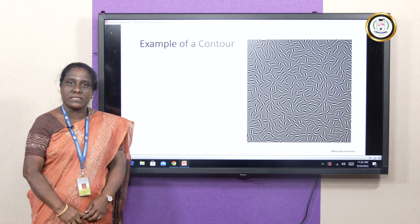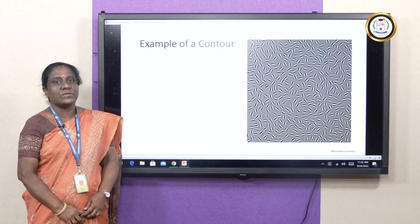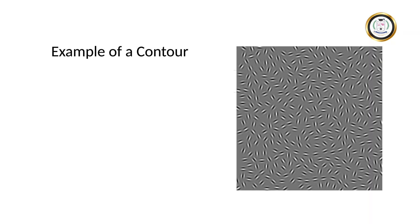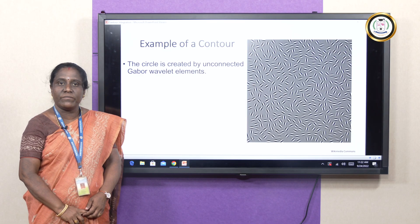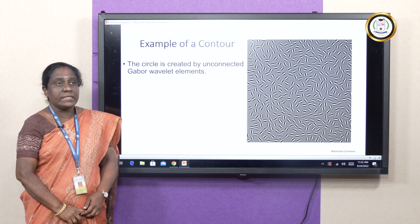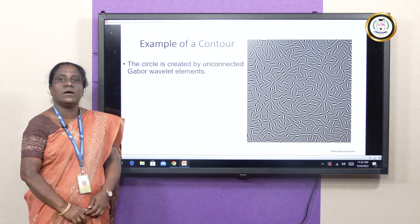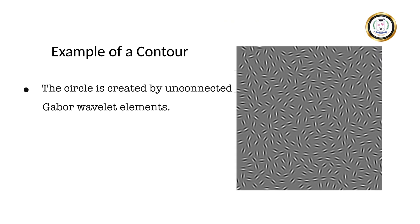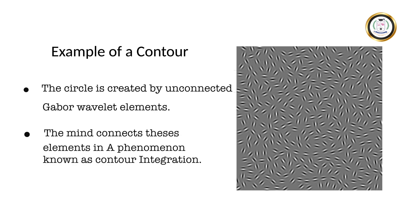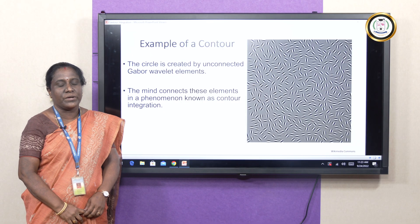Now you can see an example of a contour. Look at the image on the left side. The image consists of a number of unconnected Gabor wavelet elements. These elements do not form a particular image, but you can see a circle in this image. This circle can be identified by our mind based on the concept of contour.